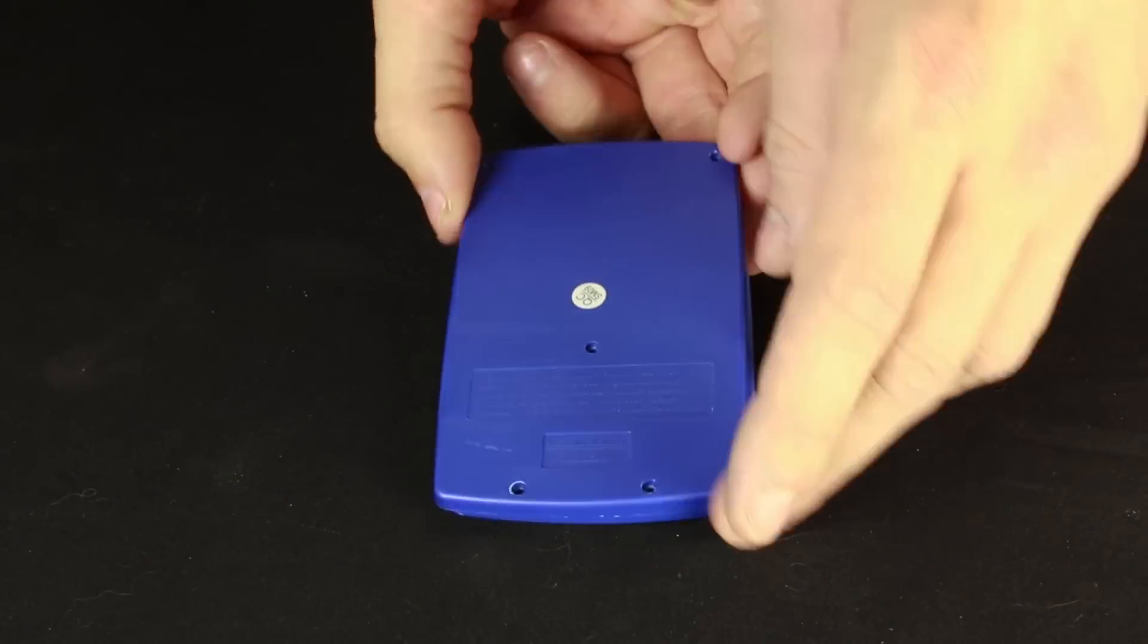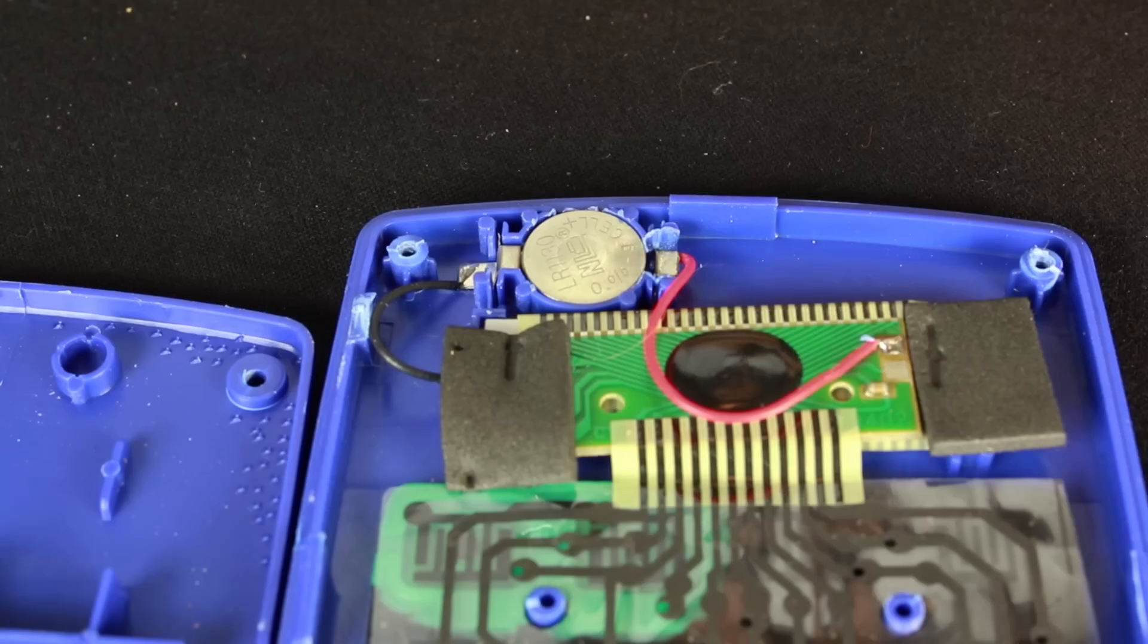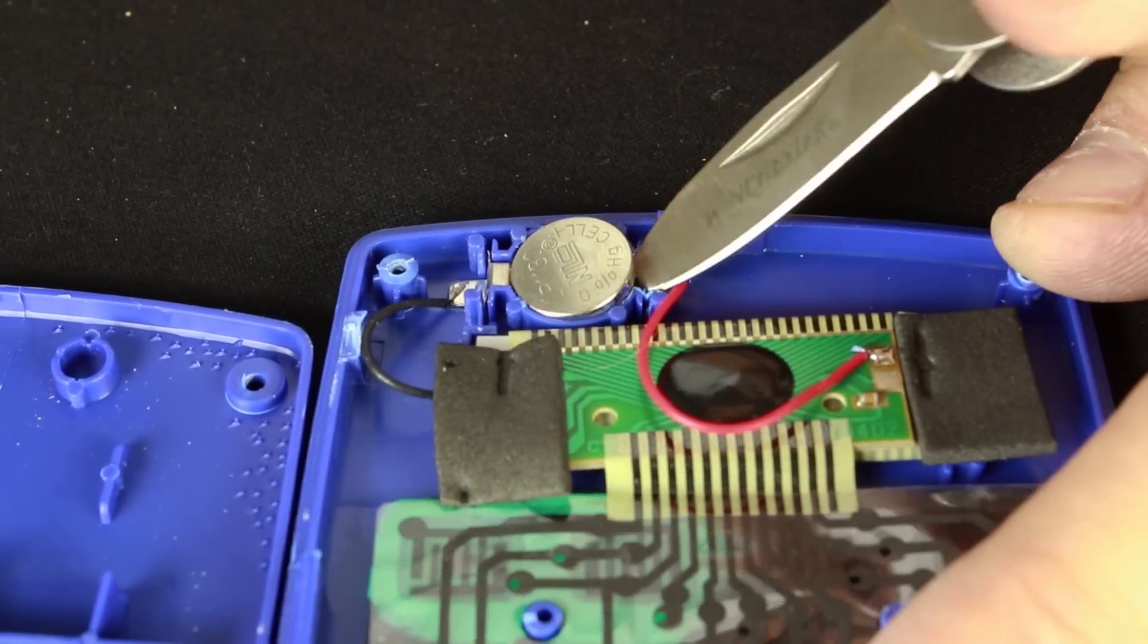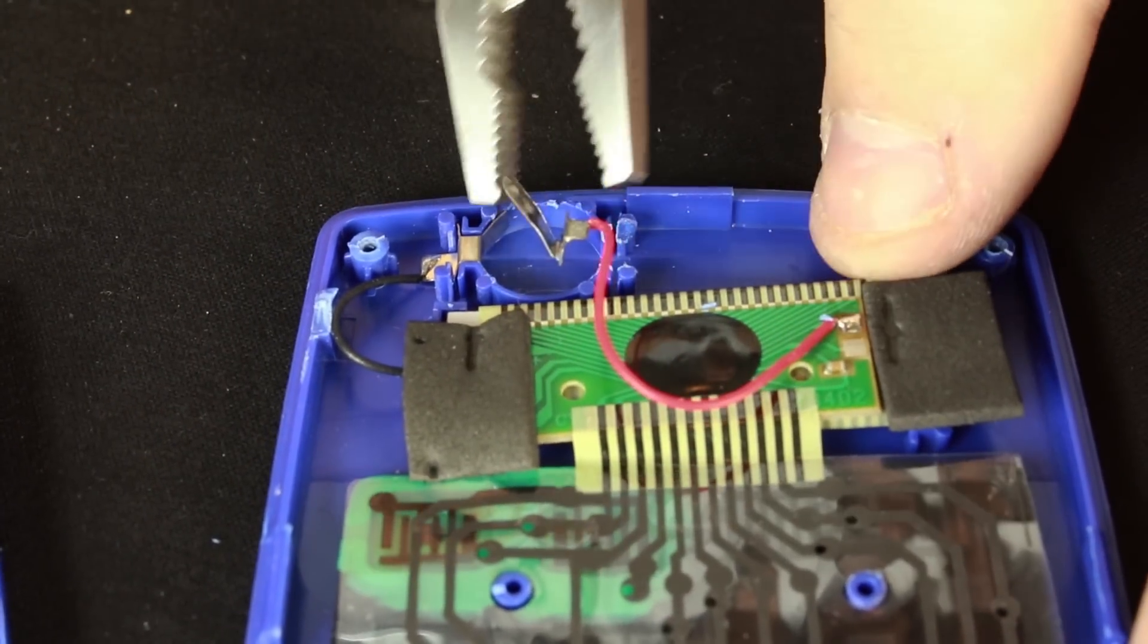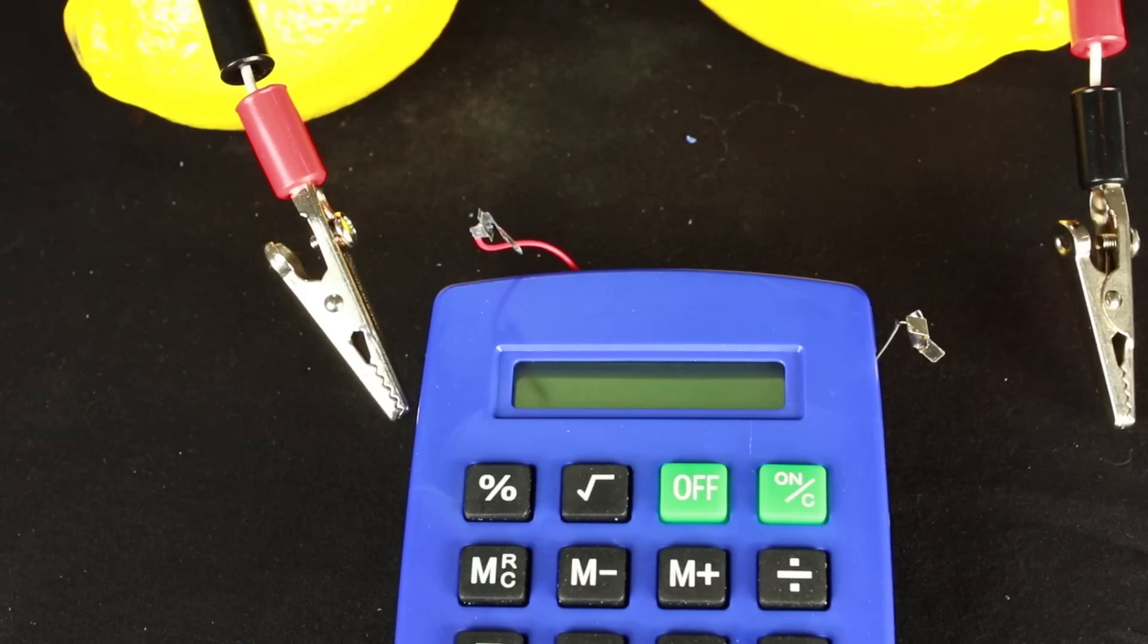At this point, open the case to the calculator and locate the battery compartment. Remove the battery and break the wires free from the case. Now you're ready to connect the lemon battery to your calculator.